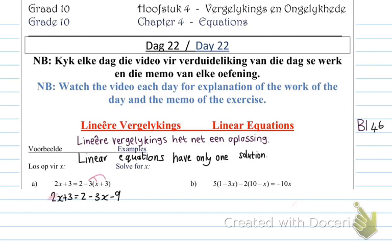Now I have x's on both sides, so I want to take all the x's to one side. It's 2x plus 3x — because the negative 3x goes over, it becomes plus 3x — equals 2 minus 9 minus 3, because the plus 3 becomes negative 3 on the other side. So 2x plus 3x is 5x, and 2 minus 9 minus 3 is minus 10. To get x alone I divide both sides by 5, so x equals negative 2. The 5 was multiplied by x, so to get rid of it I divide the other side by 5: 10 divided by 5 is negative 2.